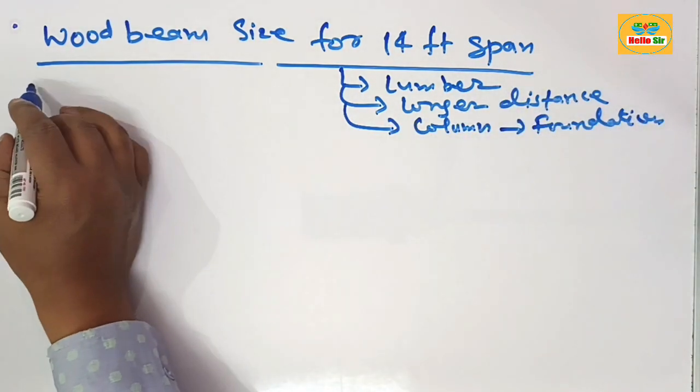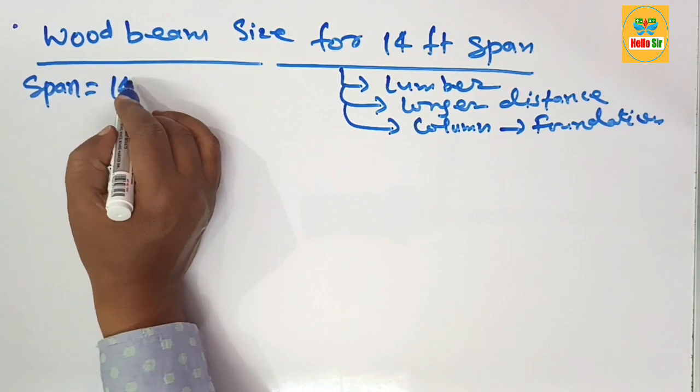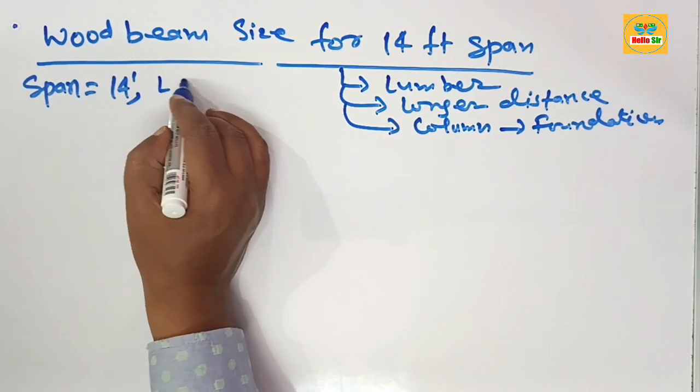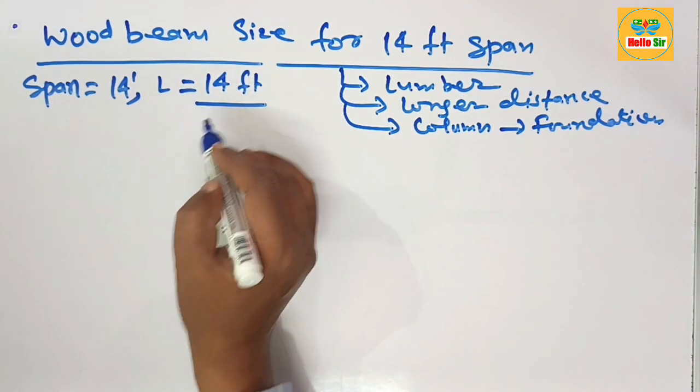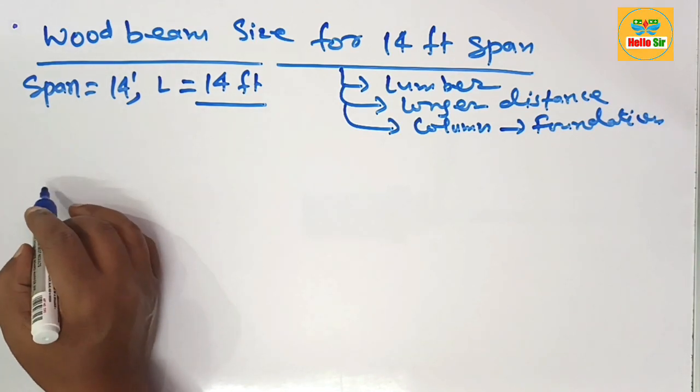Here you have given the span length of the beam is 14 feet, which means the length of wood beam required is equal to 14 feet. First we describe the different dimensions of the wood beam. Here we make a